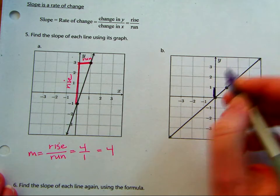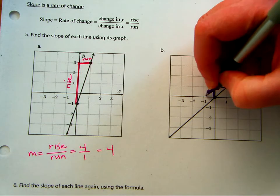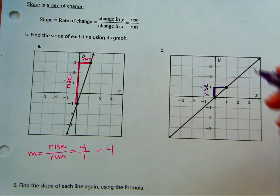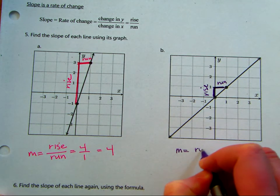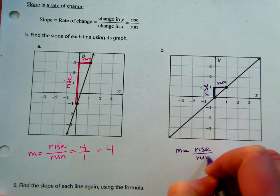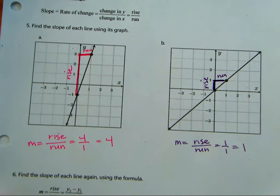Draw your slope triangle for B. One, one. Yep. One over one is one.